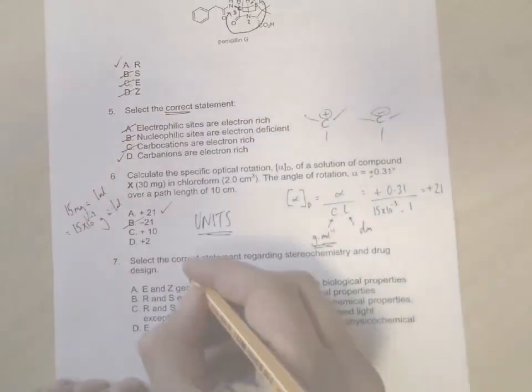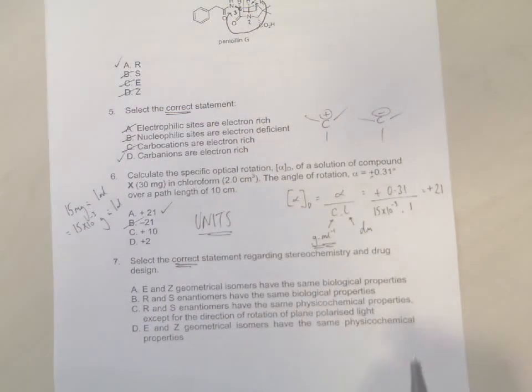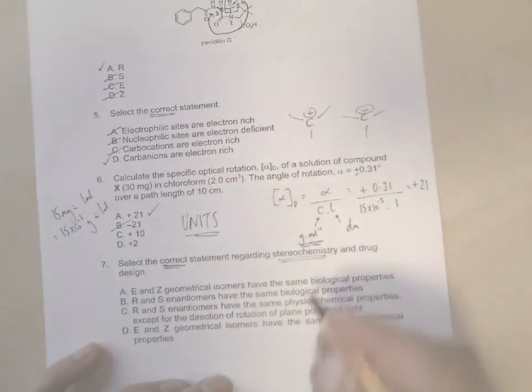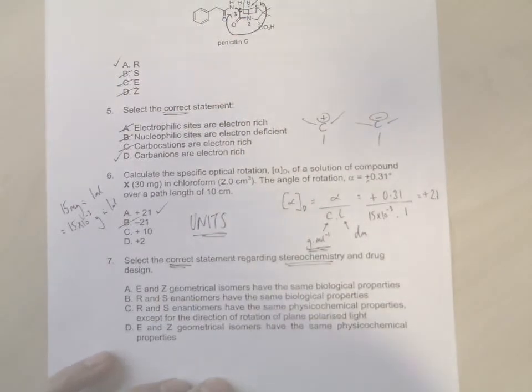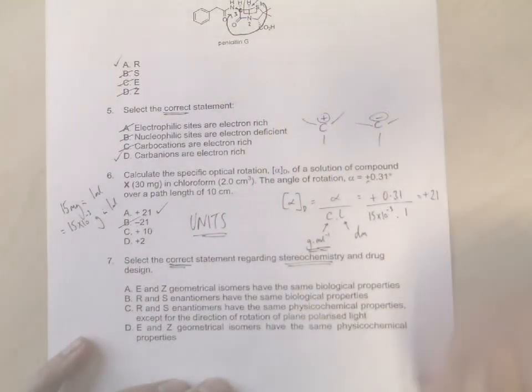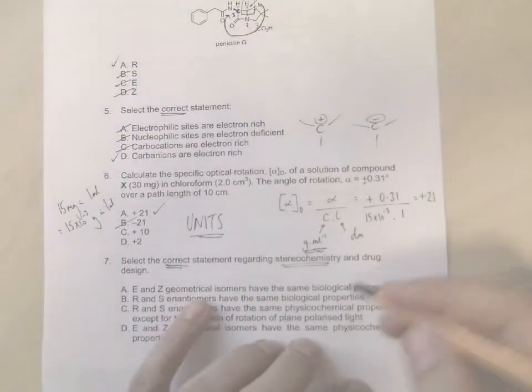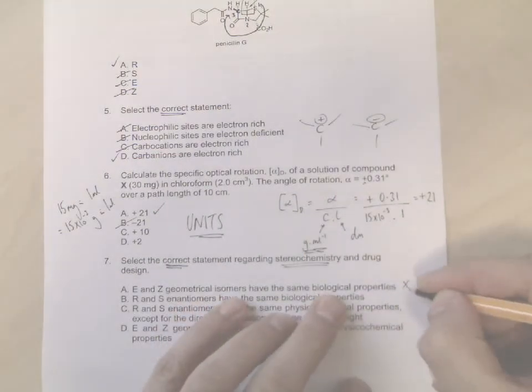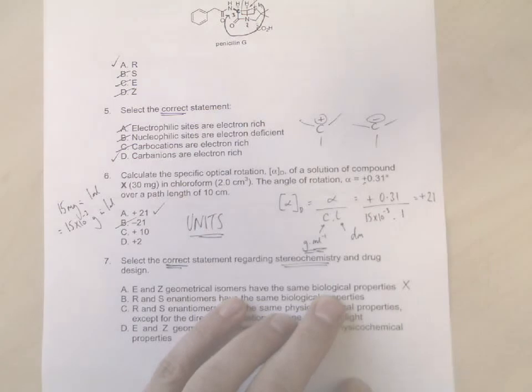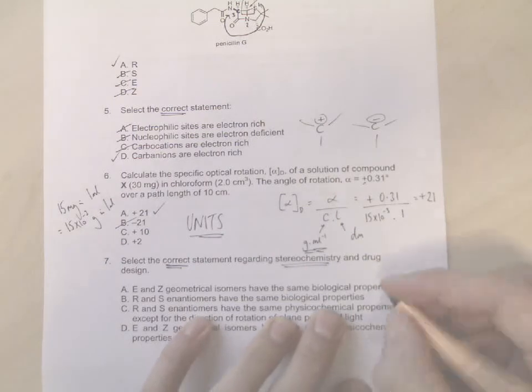Question seven: Again we're looking for the correct statement regarding stereochemistry. Okay, so stereochemistry is R and S chiral centers, E and Z double bonds. And this is something you will have to have remembered from your lecture notes. So E and Z geometrical isomers have the same biological properties? Well that's wrong, because in the lectures we talked about different isomeric double bond isomers having different properties and I gave you some examples.